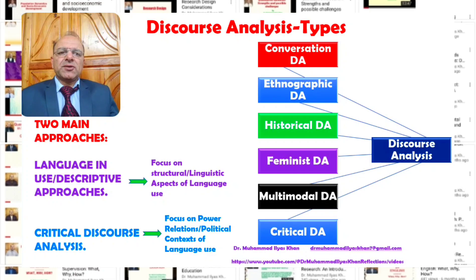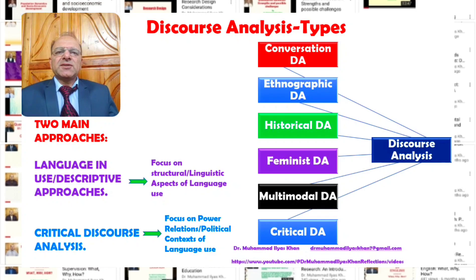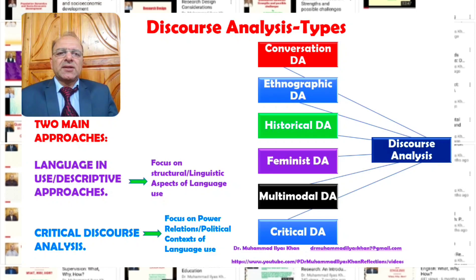The second approach is critical discourse analysis. Here, the analysis is focused on the power relationship or political context of the language used — what is the political context of the language, how is power represented through the use of language, or how is power manipulated or established through the use of language. Besides these two main approaches — the descriptive approach and the critical discourse approach — there are certain types of discourse analysis that have been identified as well, and these types generally fall either in the descriptive or in the critical discourse analysis approaches.